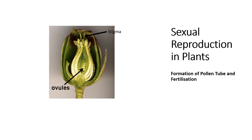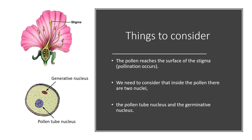As the pollen lands on the surface of the stigma, the male cell in the pollen needs to meet the ovum or egg cell, which is located in the ovule inside the ovary. The distance between the stigma and the ovule is quite far for the pollen to reach. How will it reach the ovule for fertilization? That is our question.